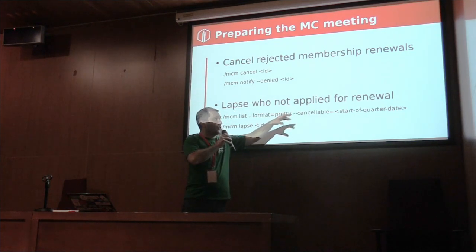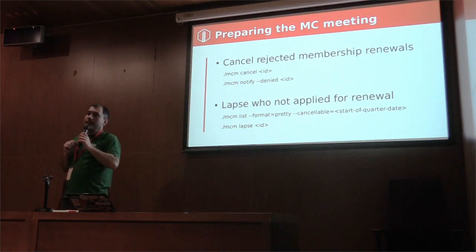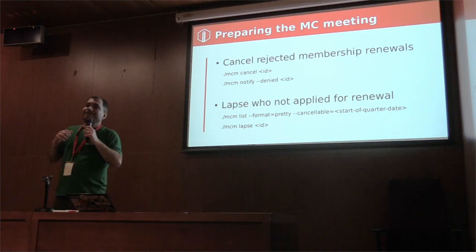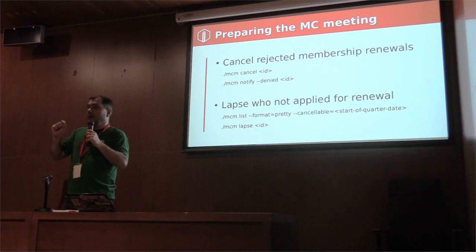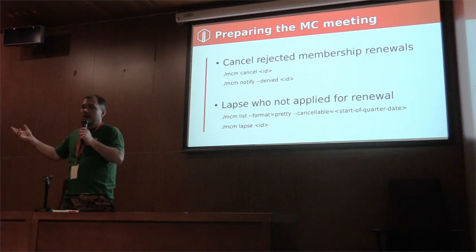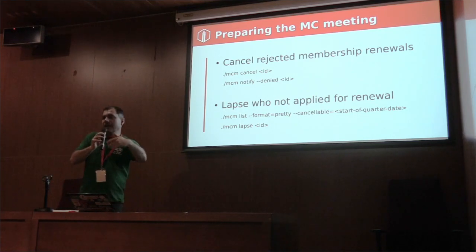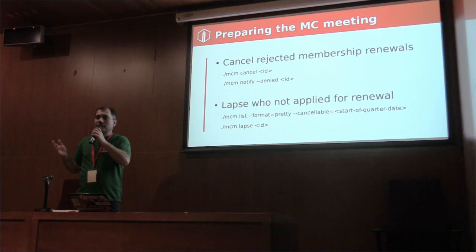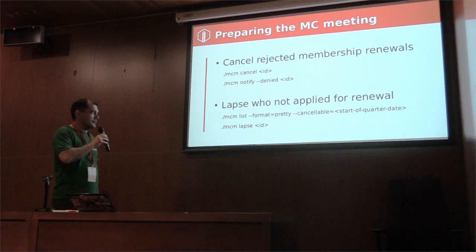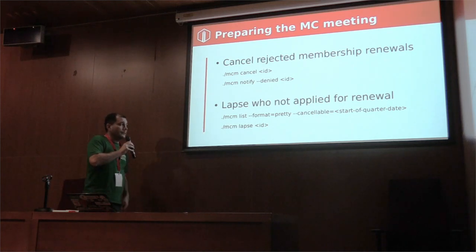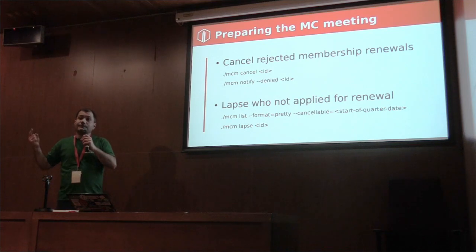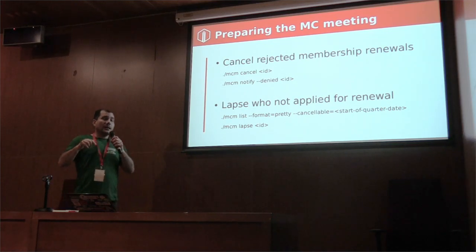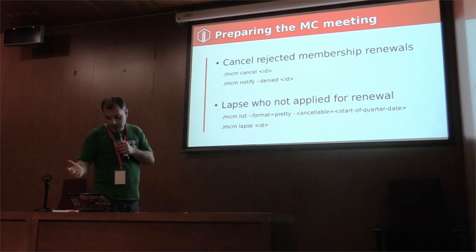Another process involves members who do not apply for renewal. Sometimes there is a situation where a member hasn't answered the renewal, but the MC knows they will reapply in the next quarter for any reason — for vacation, for example. So we lapse the ID, and it's possible to decide even during the MC meeting if the person answers the email question informally, for example via chat.